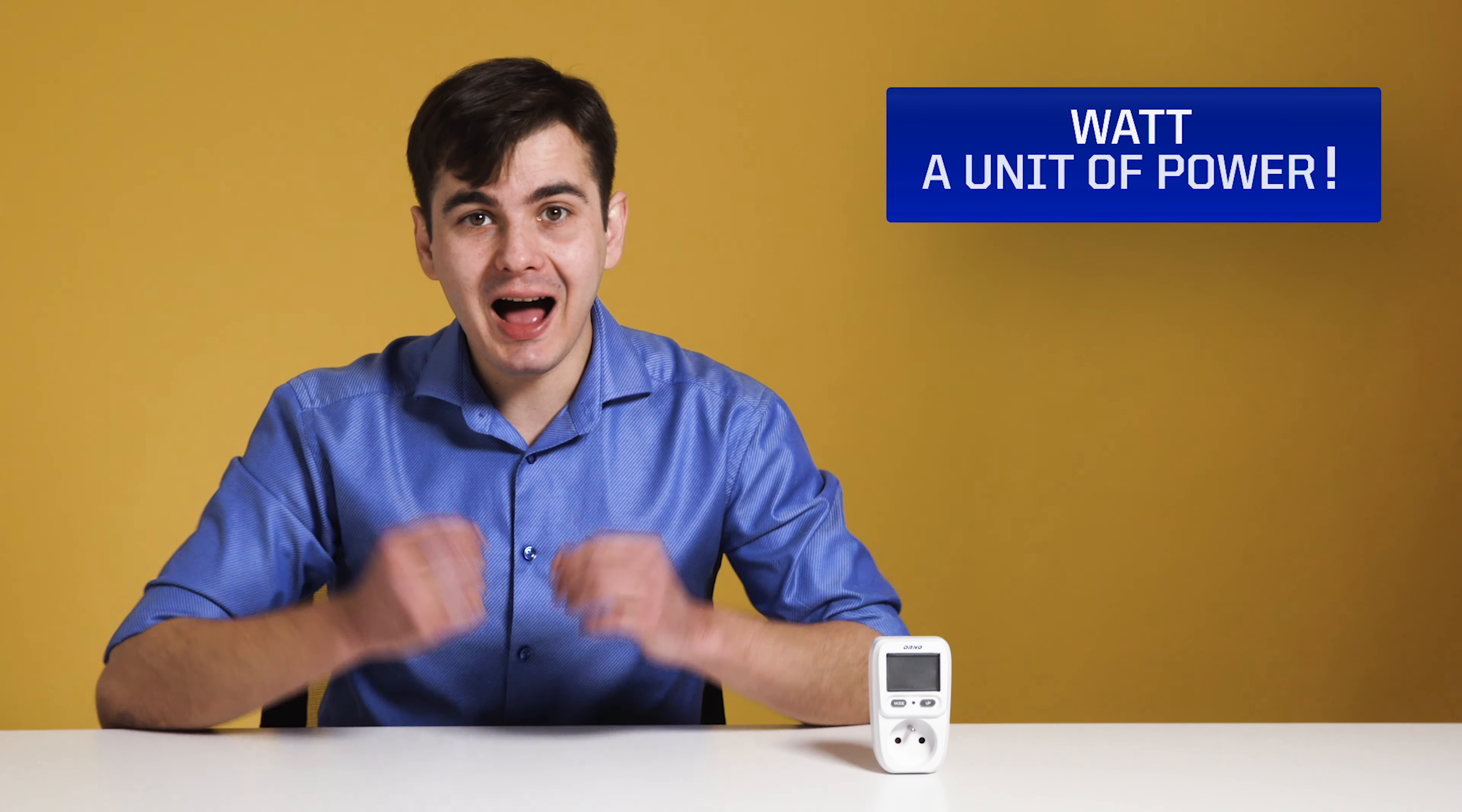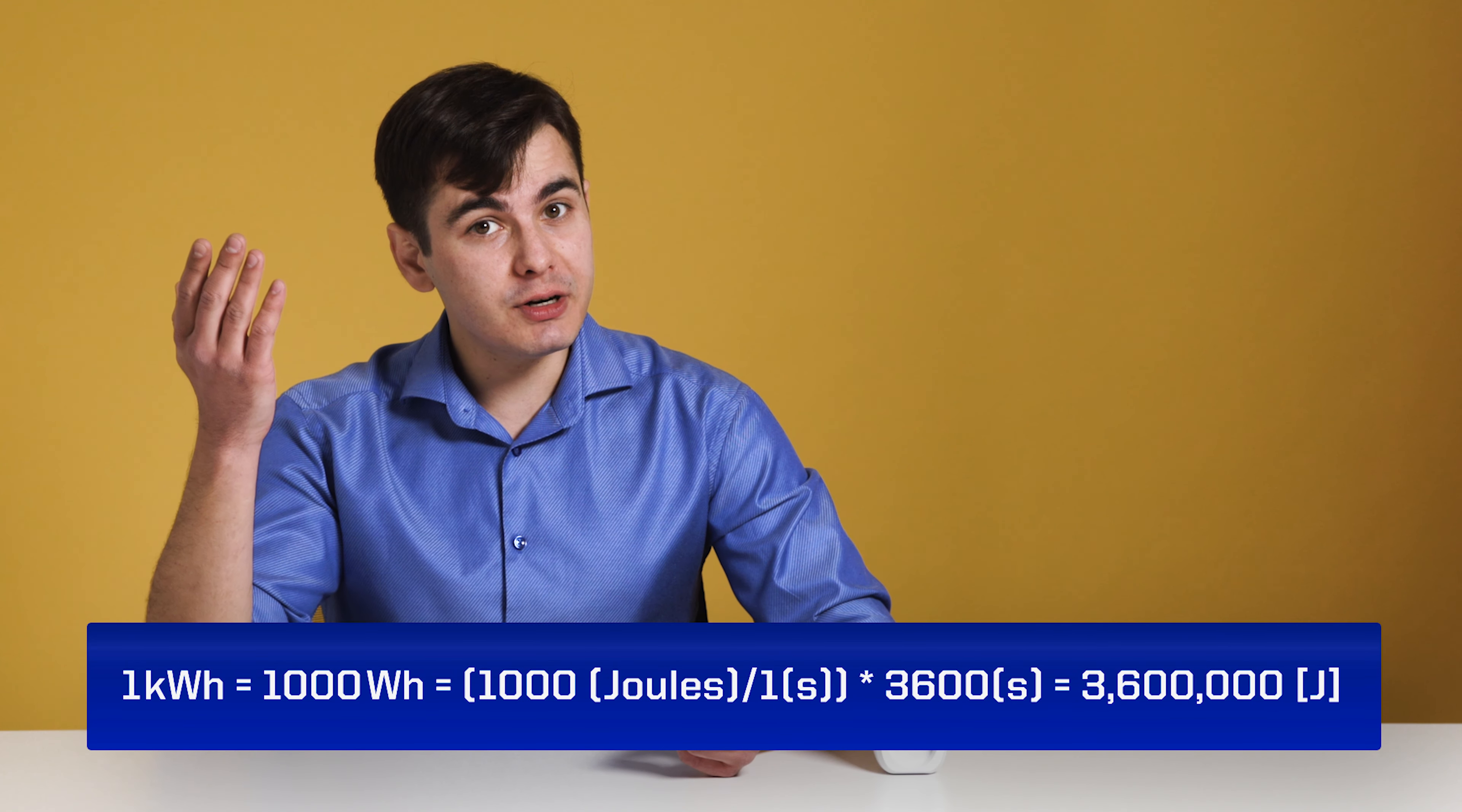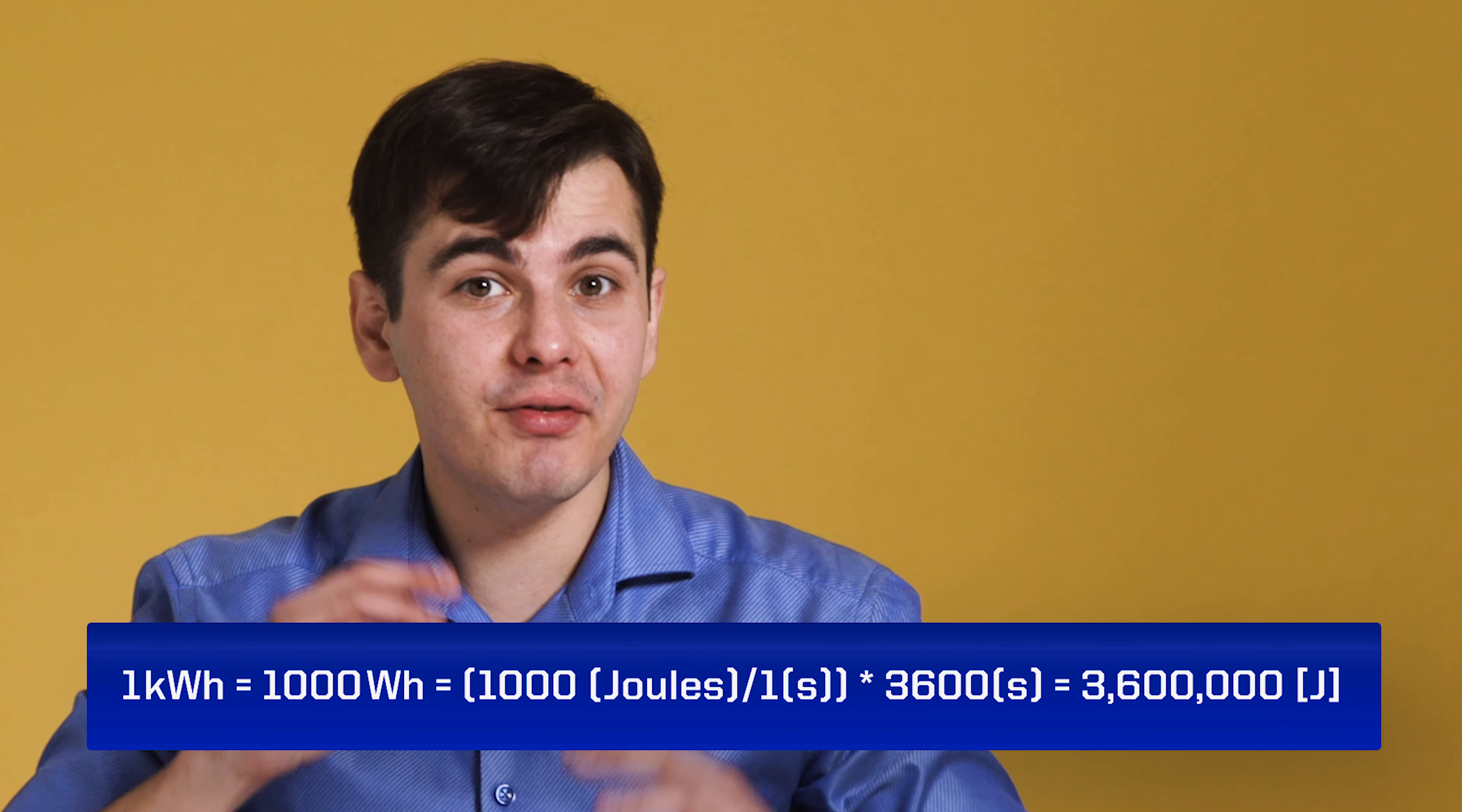Watt is a unit of power—how much energy is used per amount of time. From the SI standards, 1 watt equals 1 joule per second. So 1 kilowatt-hour equals 1,000 watt-hours, which is equal to 1,000 joules per second times 3,600 seconds, which equals 3,600,000 joules.